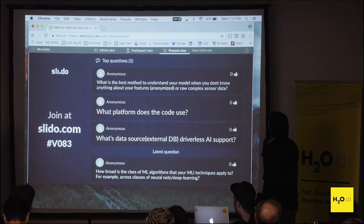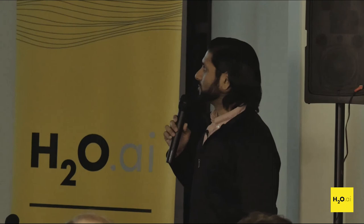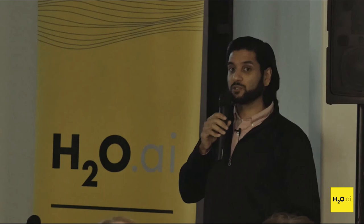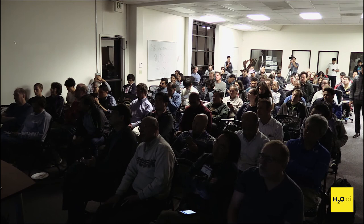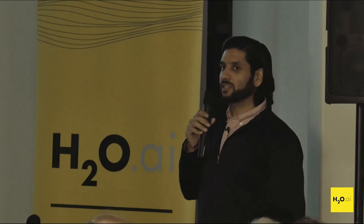The next question is: what is the best method to understand your model when you don't know anything about your features or raw complex sensor data? If you don't know anything about your features, trying to interpret what's going on would be a big task. In our MLI demos we know what each feature is and have a data dictionary. If you don't understand the data, the first thing to do is highly explore the data and really try to understand the domain. If it's sensor data, I would assume you know what certain things mean and can hypothesize about variables — but other than that, it would be very difficult.